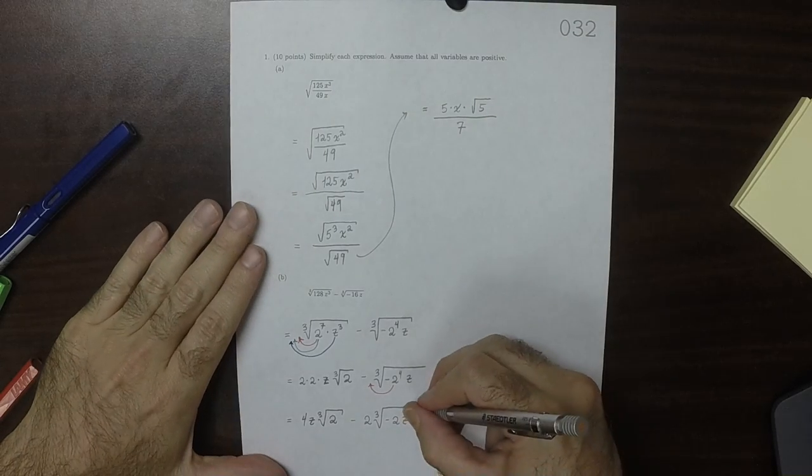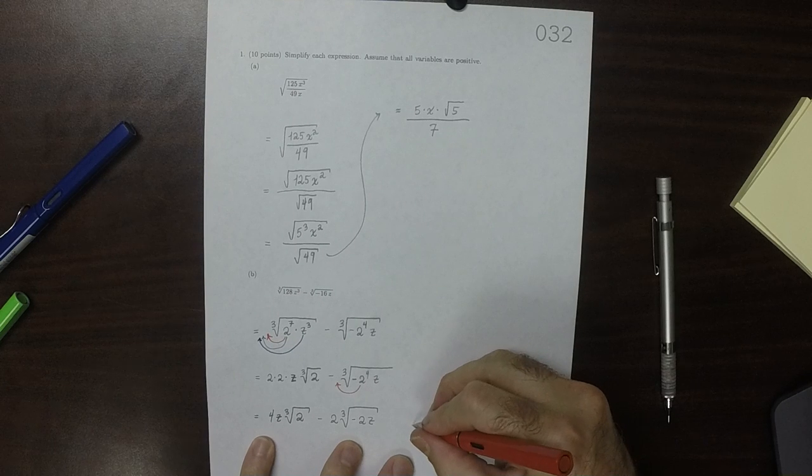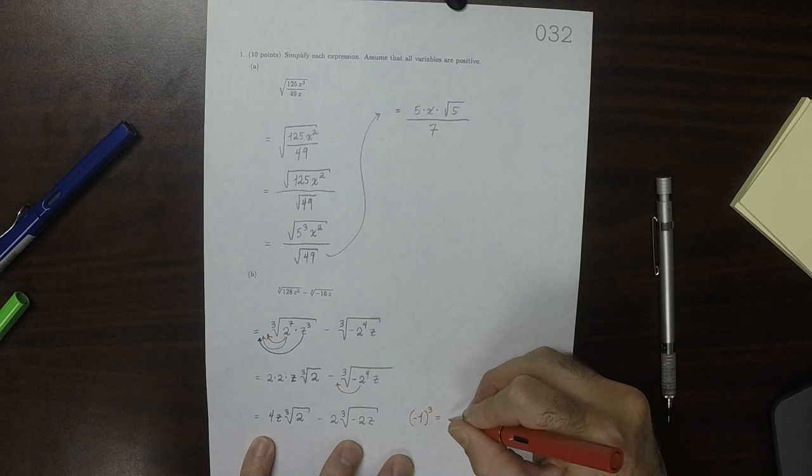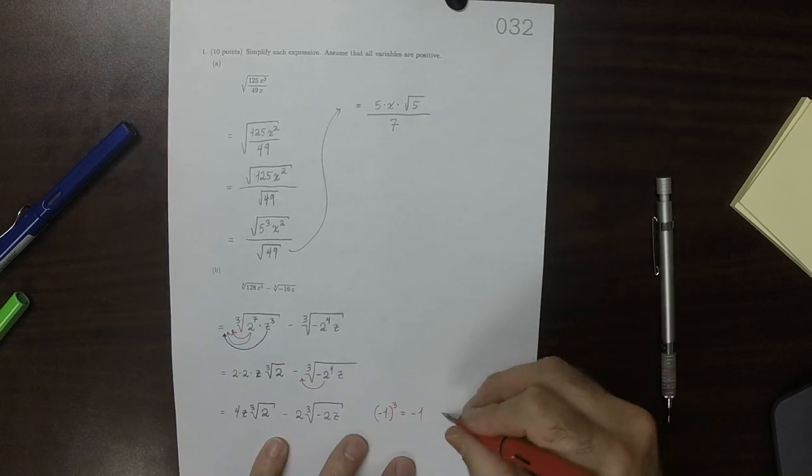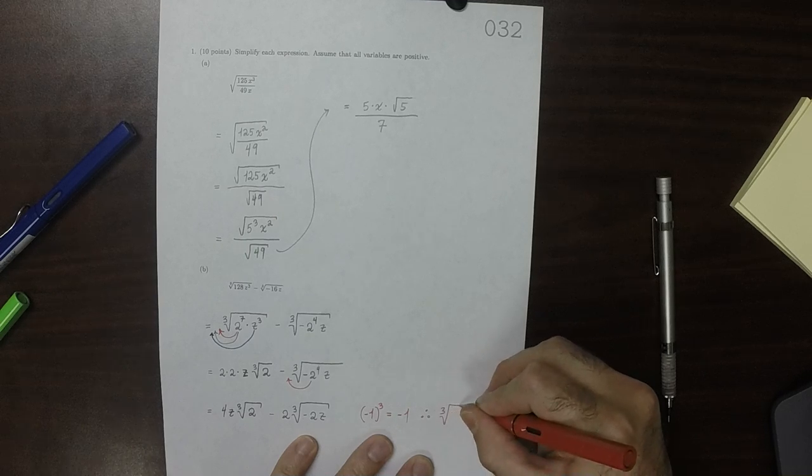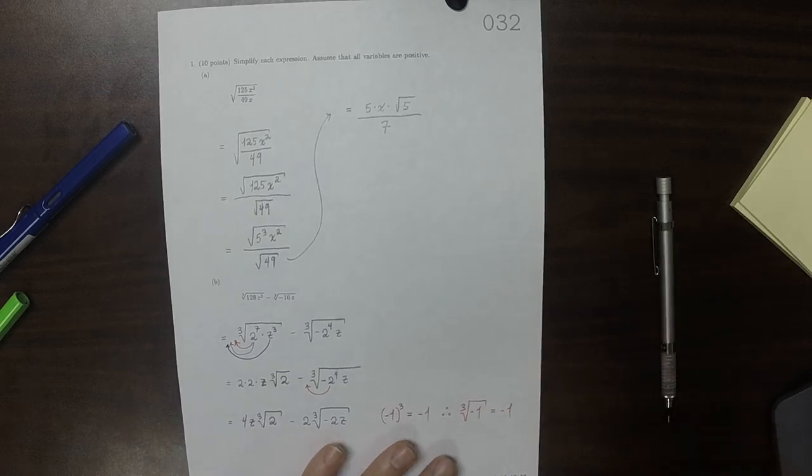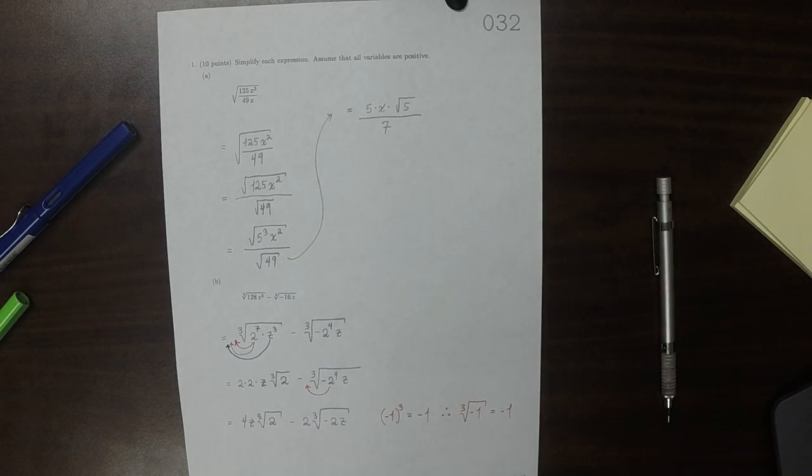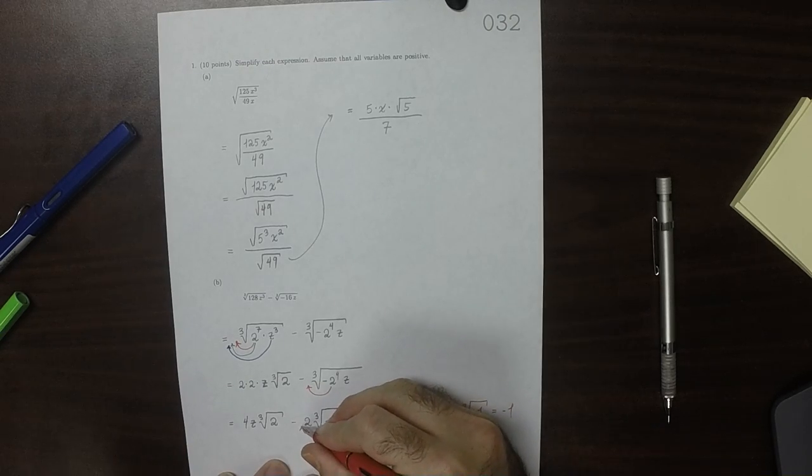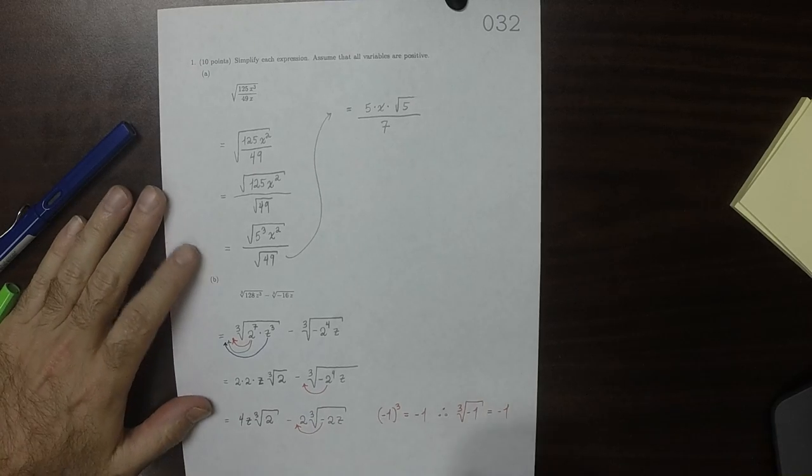The cube root of negative 1, notice that negative 1 cubed is negative 1, and therefore the cube root of negative 1 is negative 1. So that means that this negative can come out of the cube root.